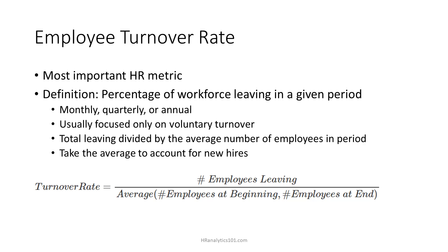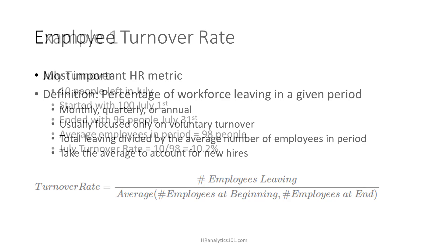To calculate the employee turnover rate, we simply count up the number of people who left voluntarily and divide by the average number of people who were employed during that time. To get the average number of employees during a period, count the number of people employed at the beginning of the period, add that to the number of people at the end of the period, and divide by 2. We take the average of those at the beginning and the end to account for those new employees who joined during the time of interest.